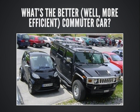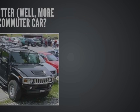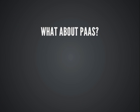A simple analogy: what's the most efficient commuter car? The VM is kind of the Hummer. You can do anything with it — if you need to go up a hill, you can. But if all you're doing is commuting on a crowded freeway, something that sips fuel is probably better. VMs are totally doable, but they're probably a little heavy. So what about PaaS?